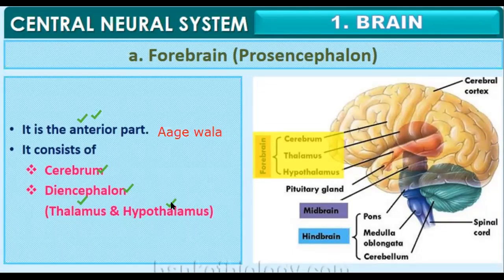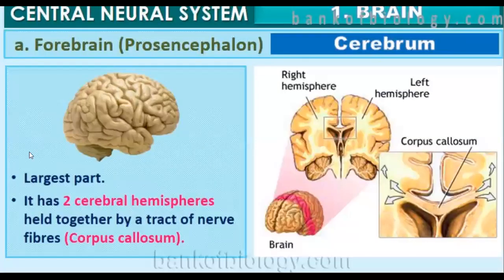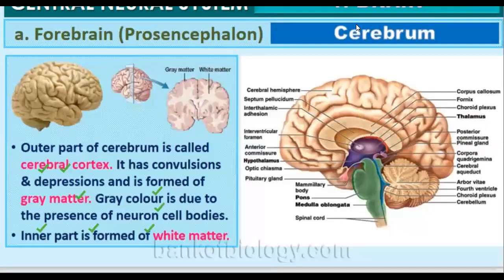The forebrain has two parts: the cerebrum and the diencephalon. The diencephalon is made up of the hypothalamus and the thalamus. Now let us discuss the cerebrum. Cerebrum is the largest part of the brain. It is made up of two cerebral hemispheres, which are held together by a tract of nerve fibers known as the corpus callosum.